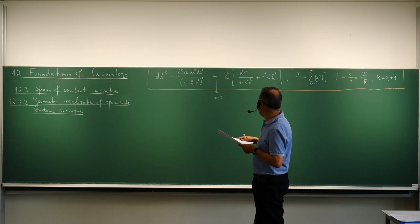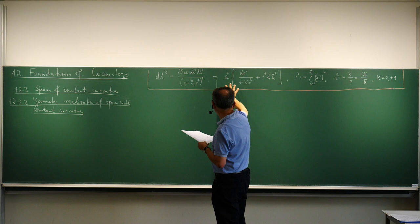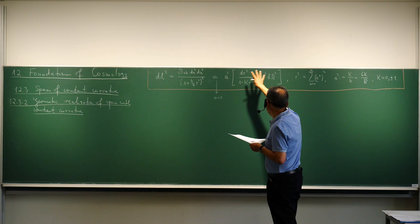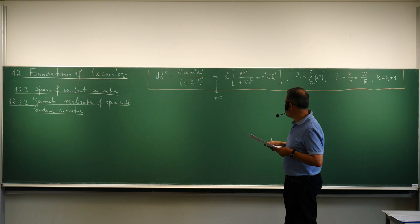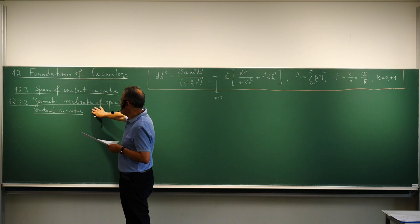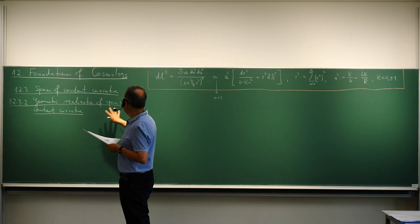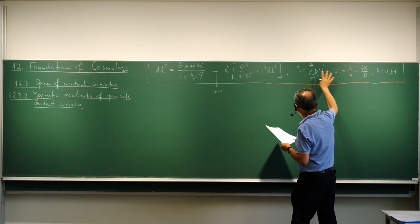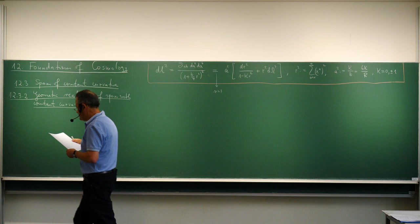Next time we will extend this to space-time — the so-called Robertson-Walker line element — where we will see that we just have a minus dt squared in addition. In the exercises you are already invited to study the Robertson-Walker metric and derive the field equations. But for us here in the lecture course, let me today still restrict to space and give you some insight into the geometric meaning. What I have prepared for section 12.3.2 is the geometric realization of spaces with constant curvature.